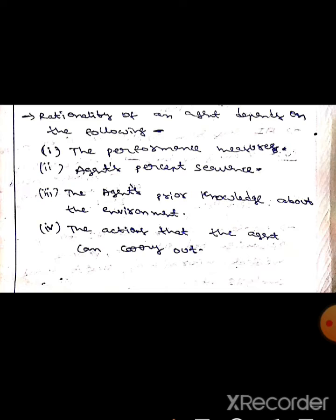The rationality of an agent depends on the following: the performance measure, the agent's percept sequence, the agent's superior knowledge about the environment, and the actions of the agent that it can carry out.